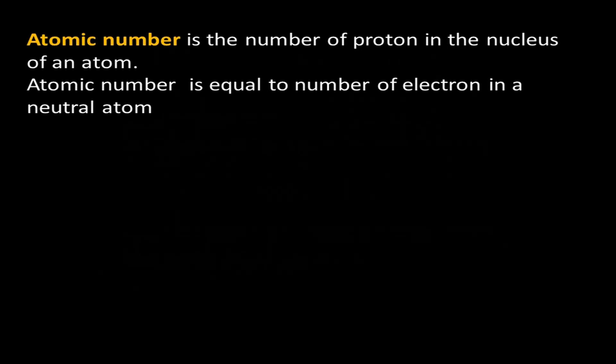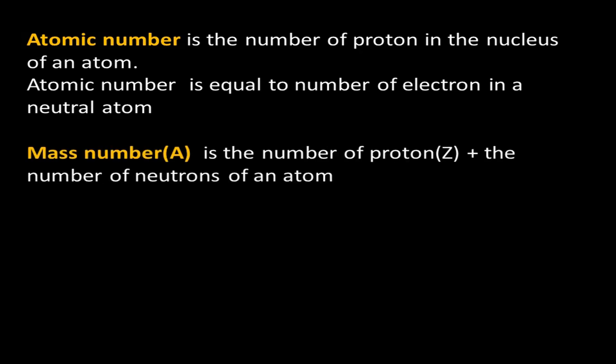The atomic number is defined as the number of protons in the nucleus of an atom. It is also equal to the number of electrons in a neutral atom — an atom that has neither gained nor lost electrons, i.e., has no charge. The mass number is the number of protons plus the number of neutrons in an atom, and is also known as the nucleon number.